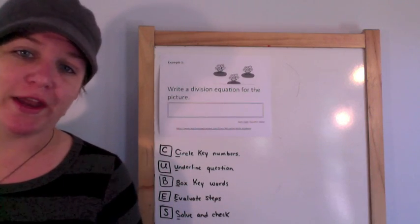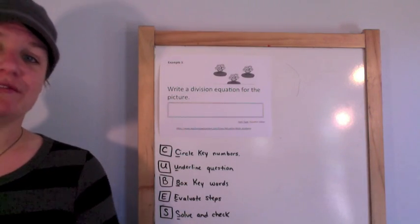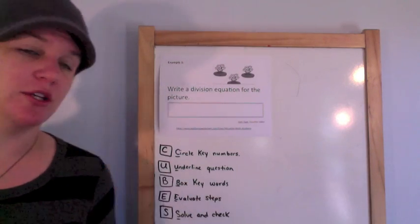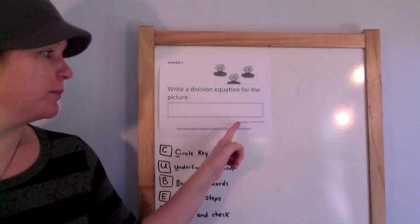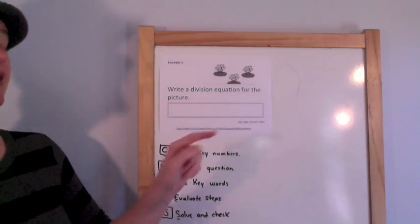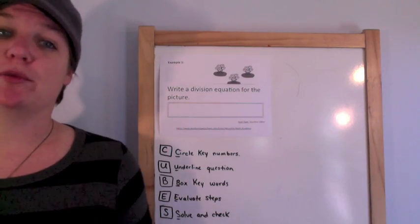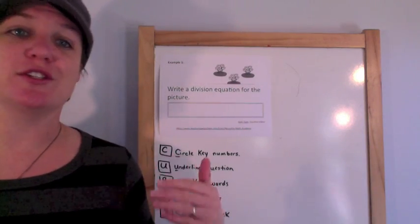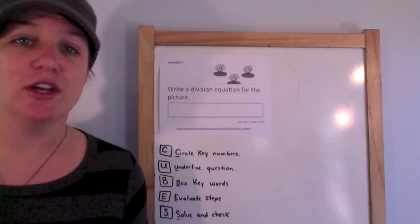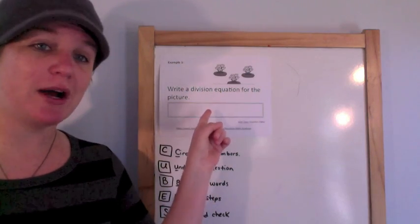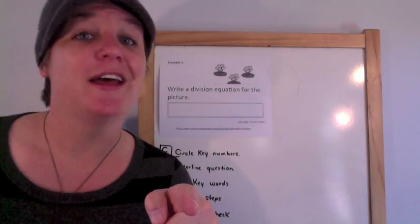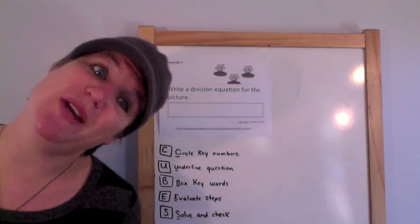Alright, so we have example 1. It says write a division equation for the picture and I want to point out the item type down here. The item type is equation editor. Not to be confused with open response. Equation editor is just you plugging in the answer to the question. And make sure nothing goes in this box except for your answer.